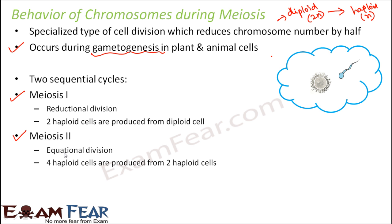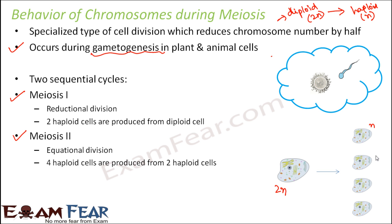Meiosis 2 is almost like an equational division — it is almost similar to mitosis, because mitosis is an equational division where the chromosome number remains the same. So meiosis 1 reduces the number of chromosomes to half and meiosis 2 divides it further, giving you four haploid cells from one diploid cell.